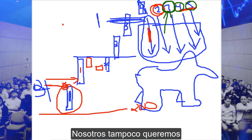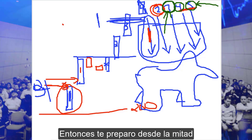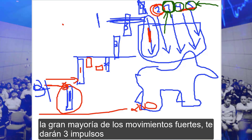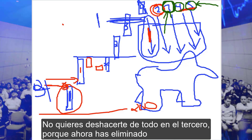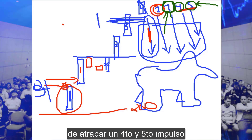We don't want to assume it's going to be a five-wave move because they don't always materialize. So I start you in the middle, because the vast majority of strong moves will give you three. We don't want to get rid of everything at three because you'd eliminate the possibility of grabbing the four-move and the five-wave place. It's all based on the number five.